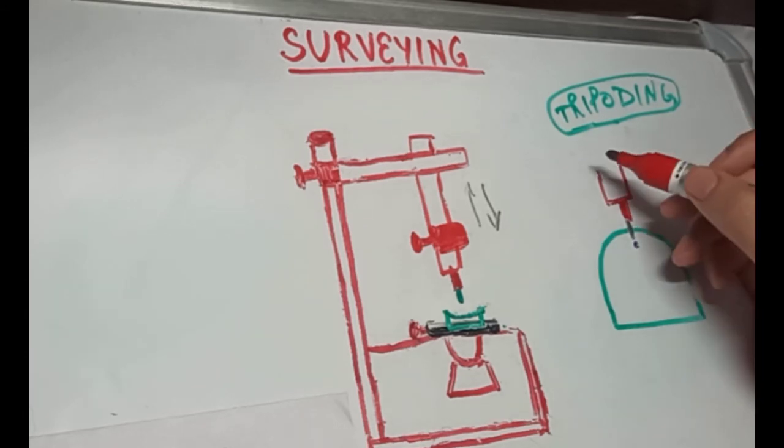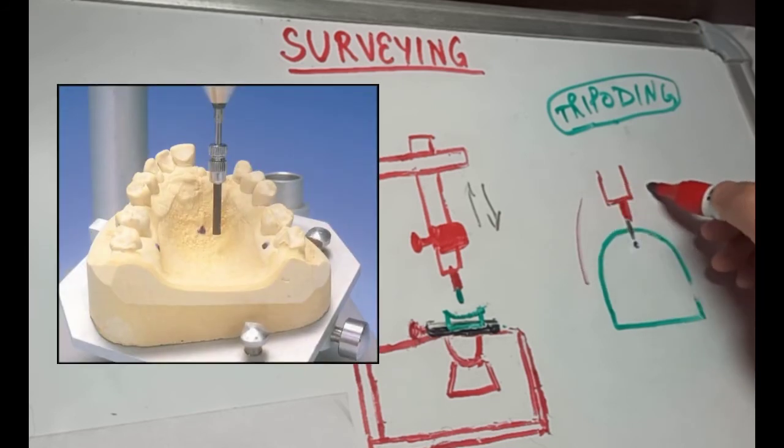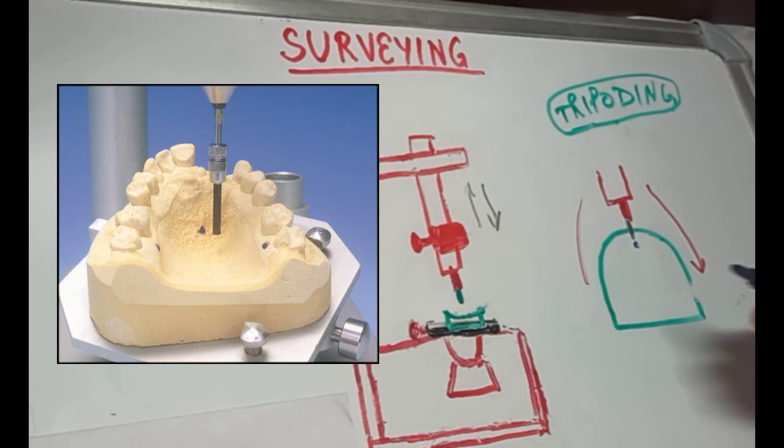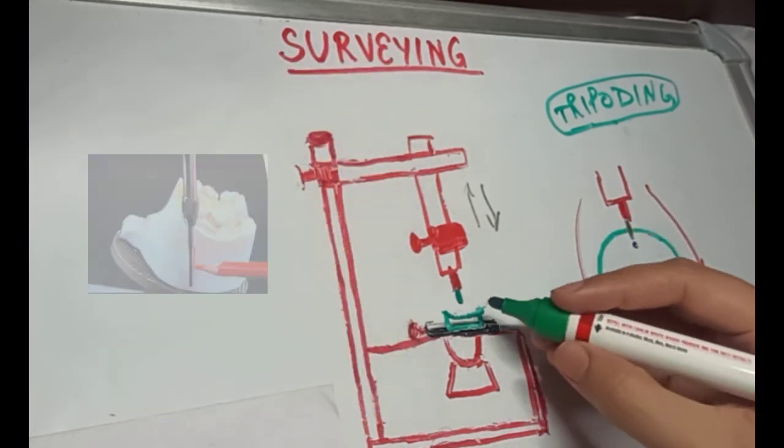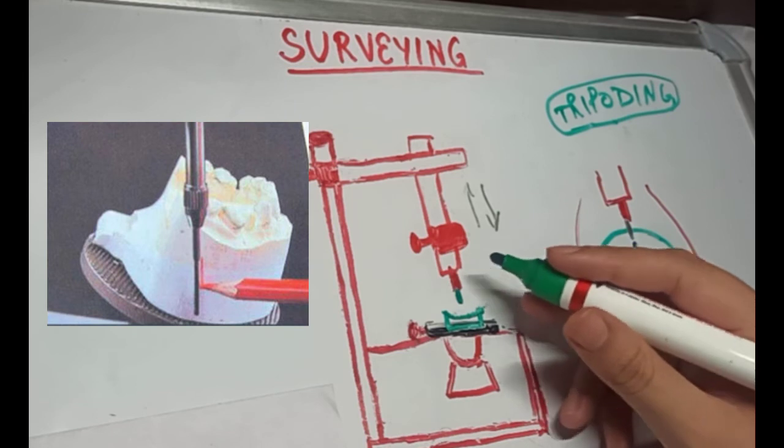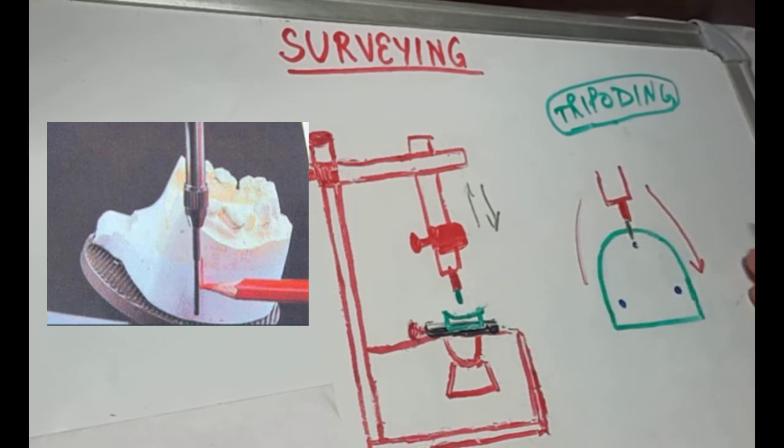Now, as the surveying arm is moved, two additional points that come into contact with the carbon marker are also marked. So, we will have three marks on the cast that are widely spaced but are in the single plane. Or alternatively, three vertical widely spaced out lines can be marked on the base of the cast using the same procedure.